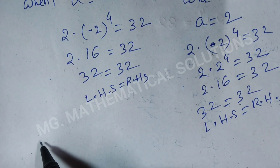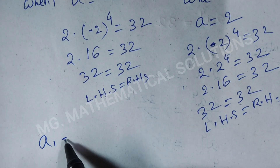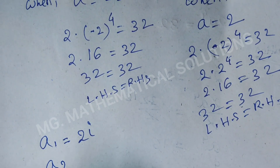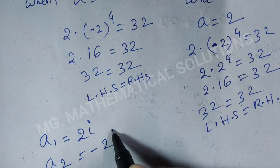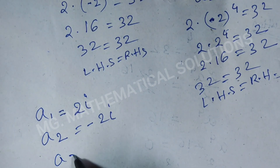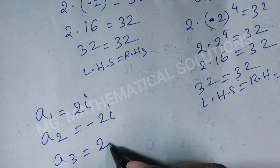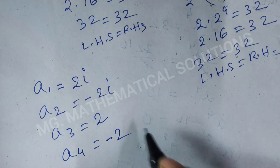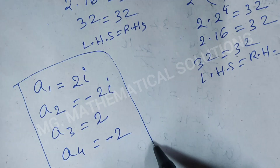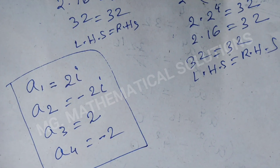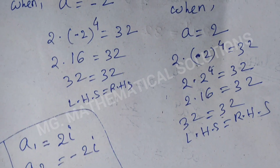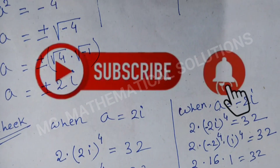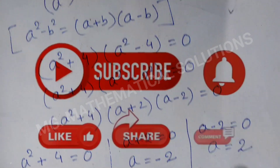So the final answer is: a1 equals plus 2 iota, a2 equals minus 2 iota, a3 equals plus 2, and a4 equals minus 2. This is the final answer. Thank you for watching my video. If you like this video, please subscribe to my channel and click the bell icon for more videos.